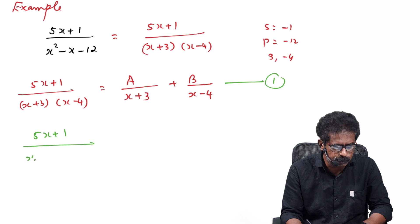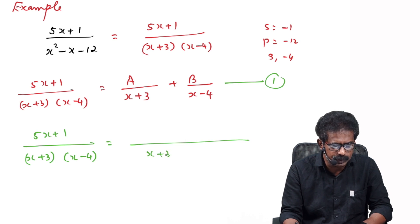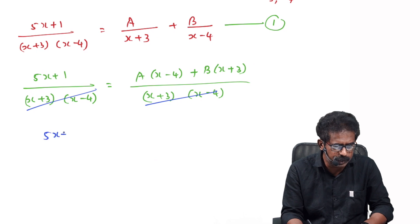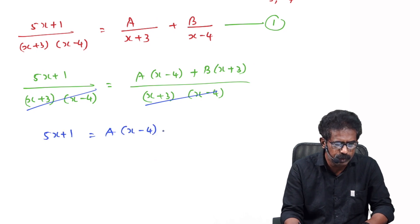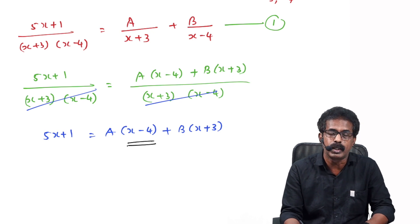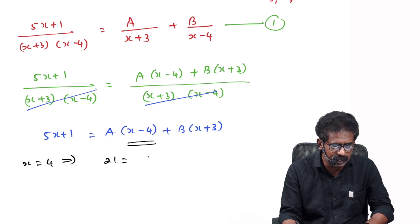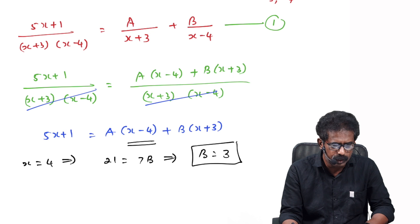Taking the LCM on the right side, the denominators cancel, giving: 5x+1 = A(x−4) + B(x+3). There are two factors, so make them zero one by one. Put x=4 to make (x−4) zero: left side gives 5(4)+1 = 21; right side the first term becomes 0, leaving B(4+3) = 7B. So 7B = 21, giving B = 3.